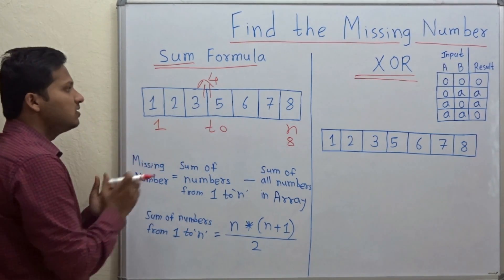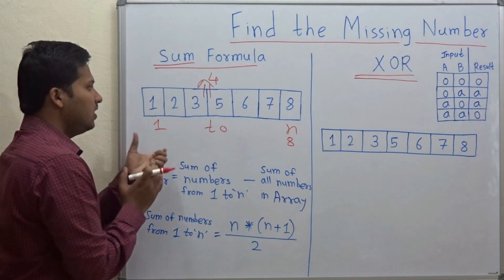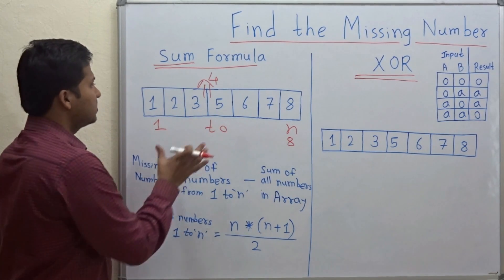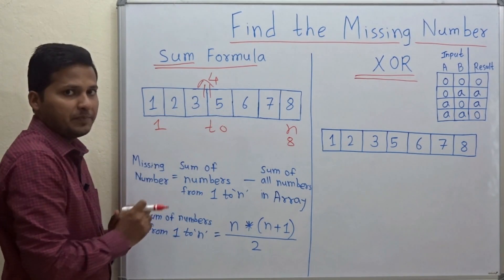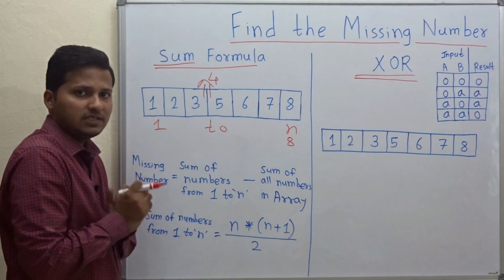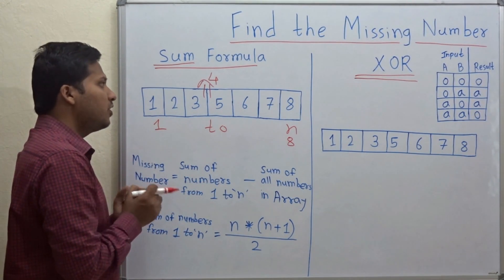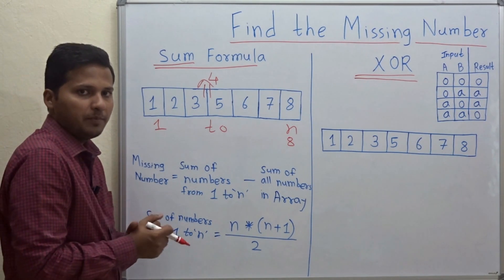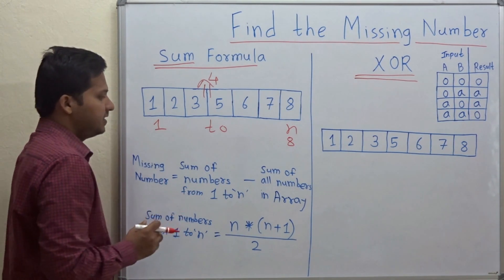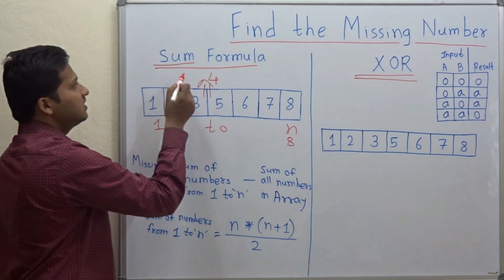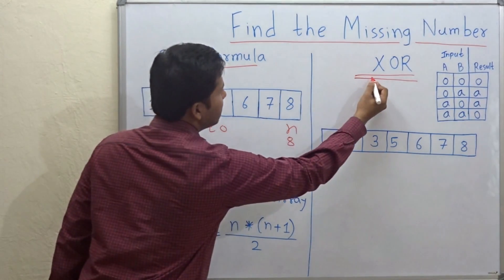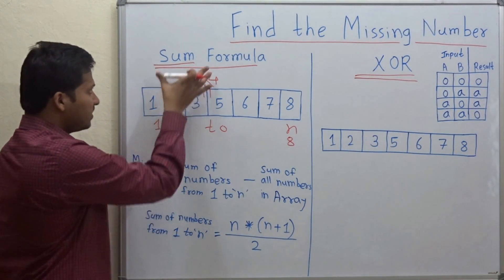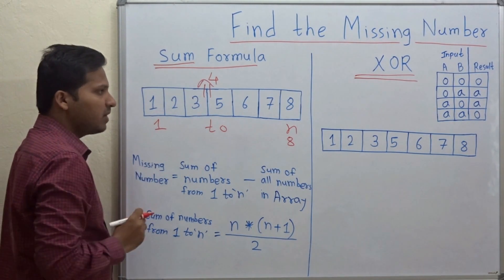Now how to find out the missing number? Because the numbers are very few, we are able to find it just by looking at the array. But if there are thousands of numbers, we will not be able to find it at a glance, so we need to write a program. There are two methods: one is the sum formula and the second is the XOR operation.